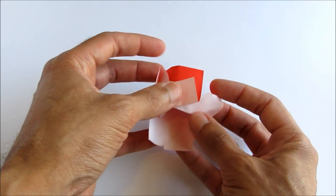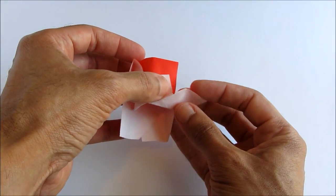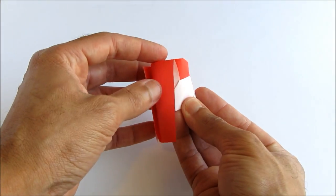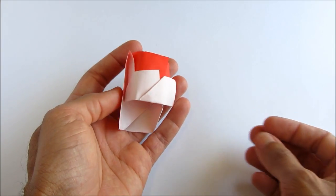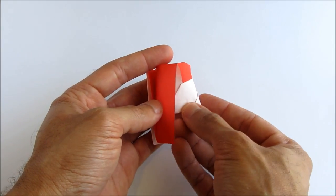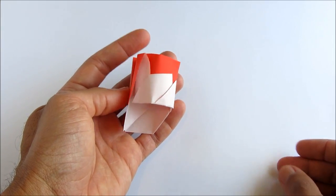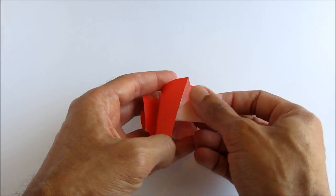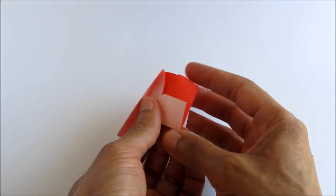Now we're going to tuck the flap we just made into the pocket formed by the first flap. And smooth out the bottom edge as we're going. Okay. Now for the third flap. Tuck that in.